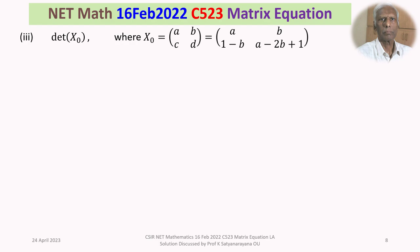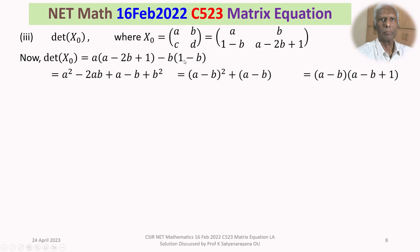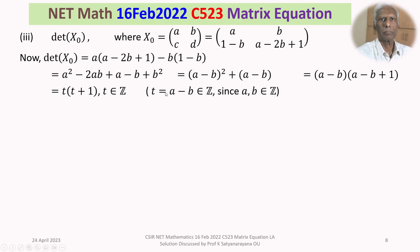What is det(X₀)? It equals ad − bc = a(a − 2b + 1) − b(1 − b) = a² − 2ab + a − b + b². This simplifies as (a−b)² + (a−b) = (a−b)(a−b+1). Setting t = a − b ∈ ℤ, we get det(X₀) = t(t+1), which is the product of two consecutive integers.